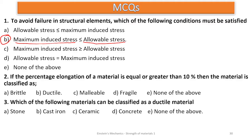Number two says: if the percentage elongation of a material is equal to or greater than 10 percent, then the material is classified as — so any material which has elongation greater than or equal to 10 percent is a ductile material.